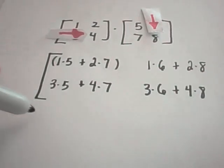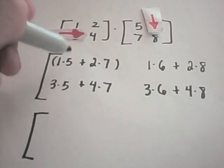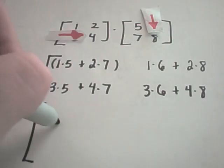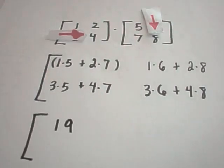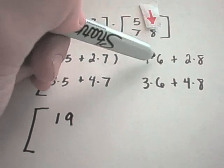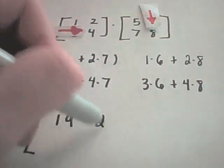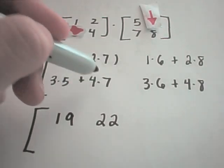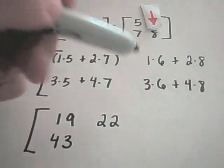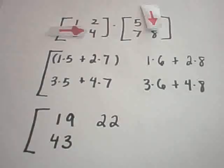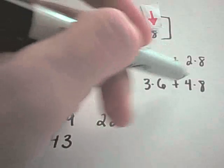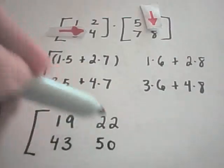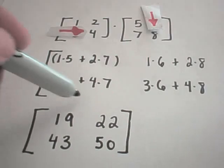So multiplying matrices is pretty tedious because it's easy to make an arithmetic mistake. So 1 times 5 is 5, 2 times 7 is 14, 5 and 14 is 19. That'll be the top left entry after we simplify. I'll get 6 plus 16, which is 22. 3 times 5 is 15, 4 times 7 is 28, 15 and 28 is 43. 3 times 6 is 18, 4 times 8 is 32, 18 and 32 is 50. And this will be your final solution.